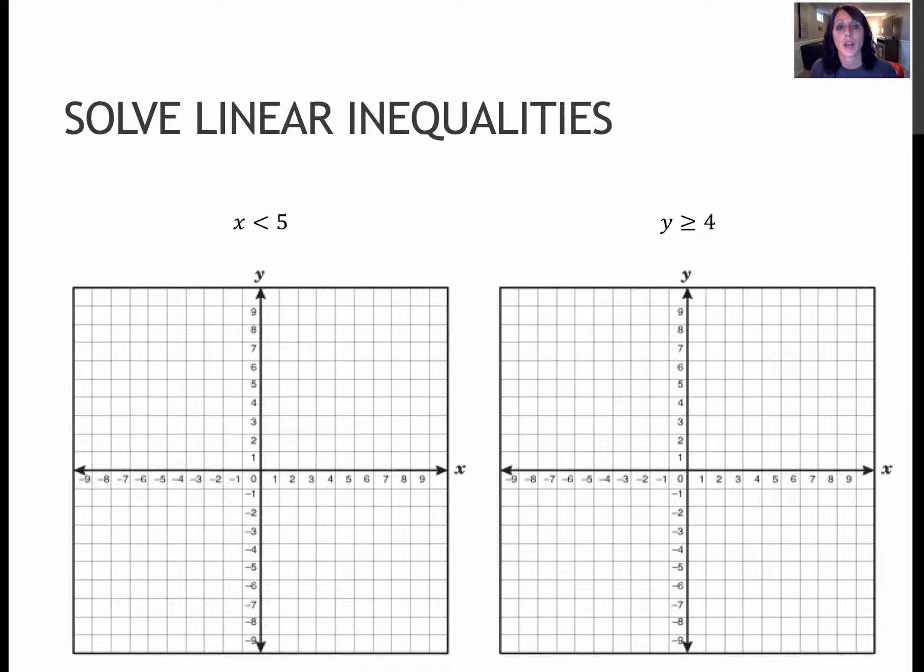Here are two more for you to try, and notice on both of these I have just one variable. So this is a good review of how do you just graph with one variable, and then of course we should also graph dotted or solid line and shade which direction.